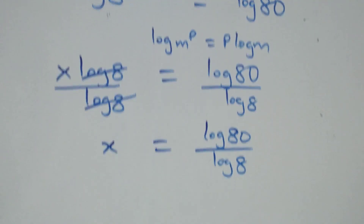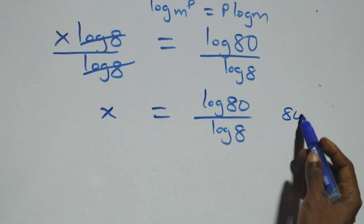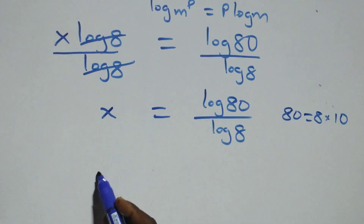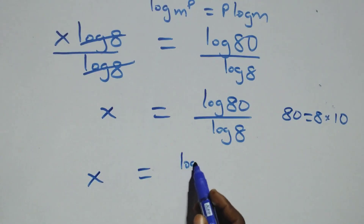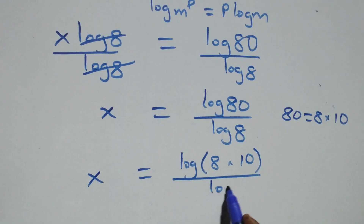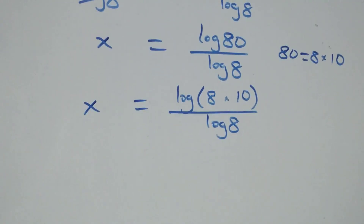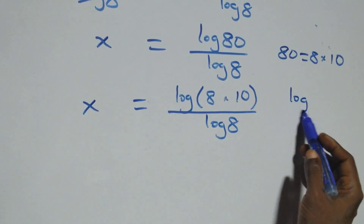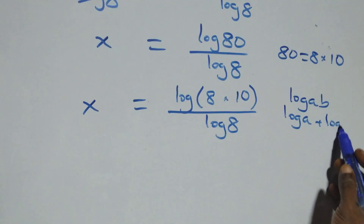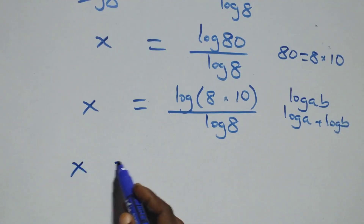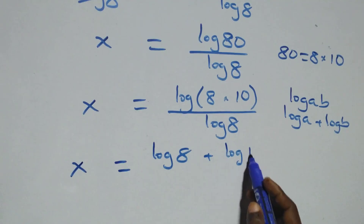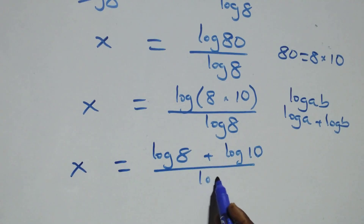Next, 80 can be expressed as 8 times 10, which implies x equals log(8 times 10) over log 8. This follows the law of logarithms: log(a times b) is the same as log a plus log b. So we have x equals (log 8 plus log 10) over log 8.